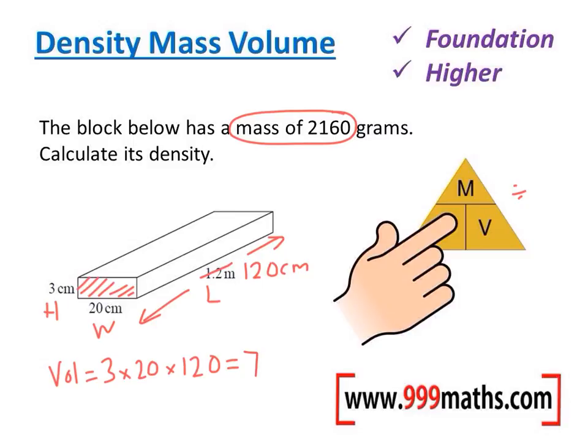Which gives me 7200, and that will be centimeters cubed. Okay, so the density is mass divided by volume. So now I'll do that calculation: the density is mass divided by the volume. So the mass in the question is 2160, the volume which we've just worked out is 7200, and calculating this on a calculator gives me the answer of 0.3.